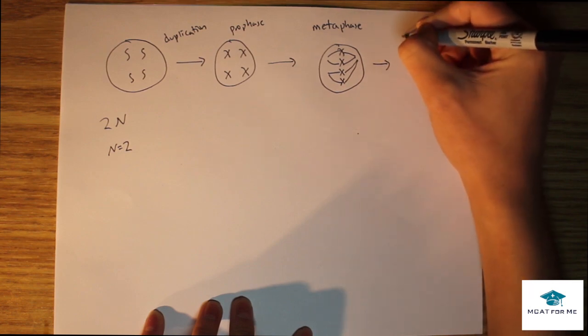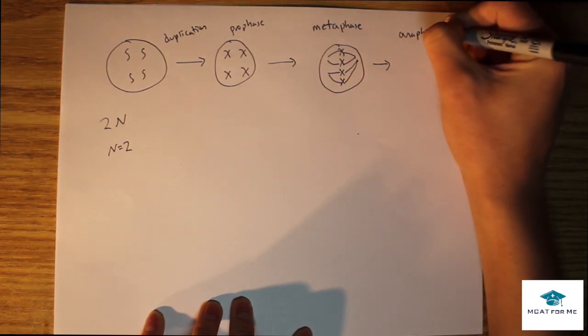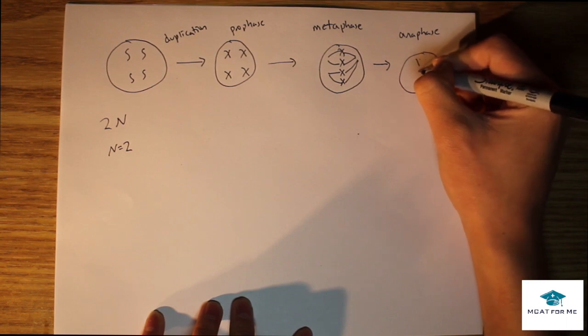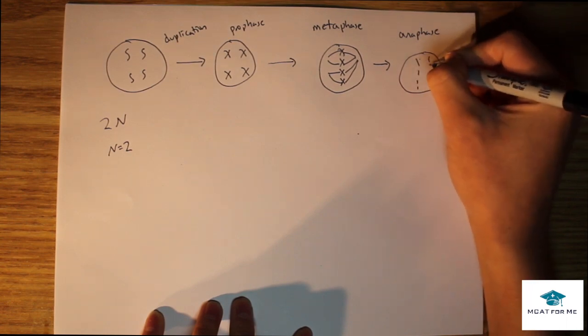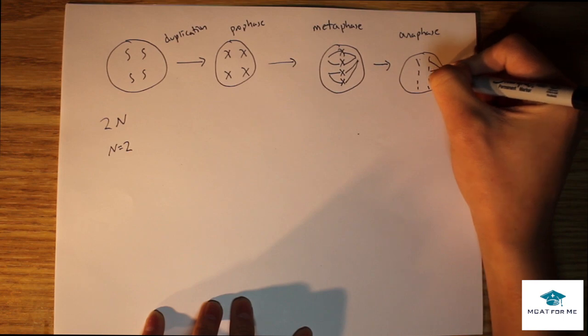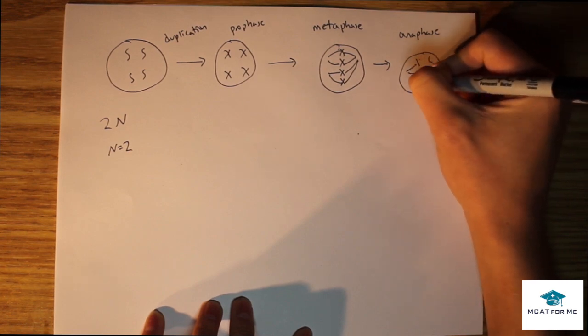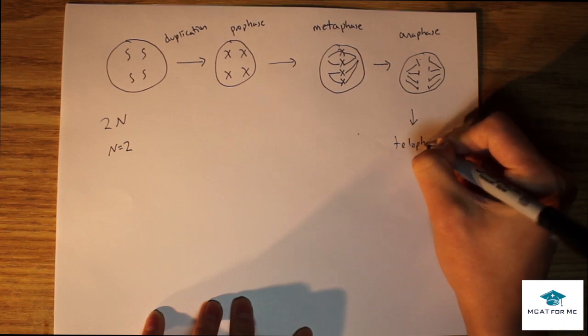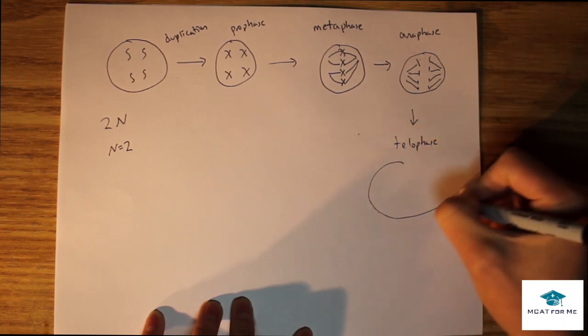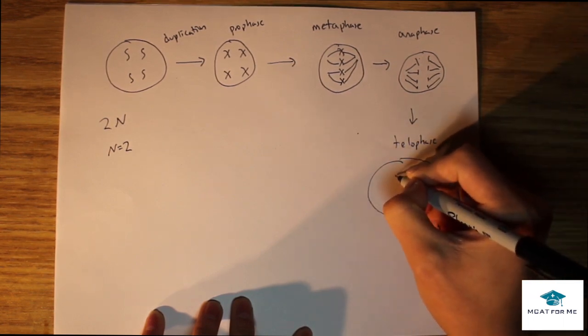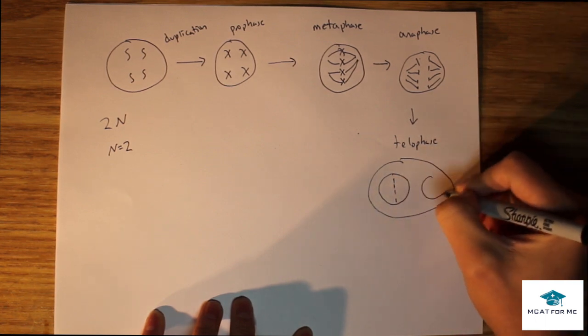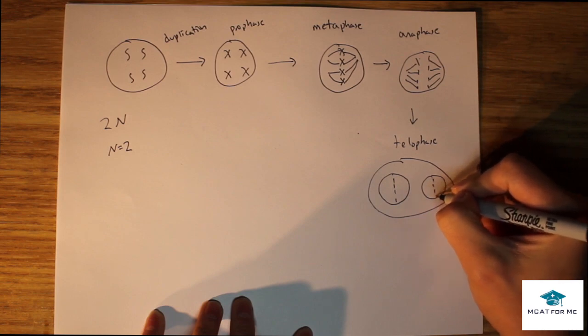Now in anaphase, they're going to be pulled apart. Everything's still intact, but all the sister chromatids are going to be pulled apart to their respective corners. Finally, we're going to have telophase. Now there's going to be a nuclear envelope that is going to be surrounding each of them. We have a nuclear envelope surrounding these four chromatids as well as these four.